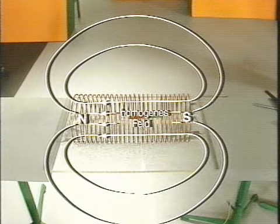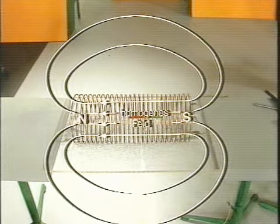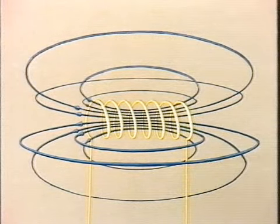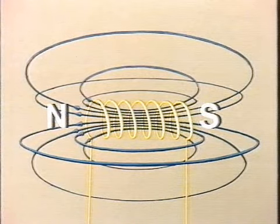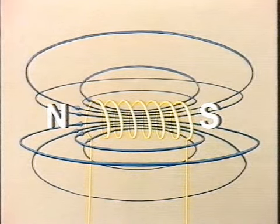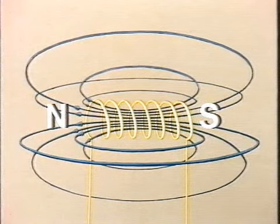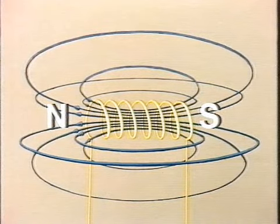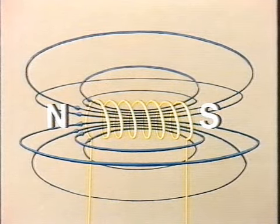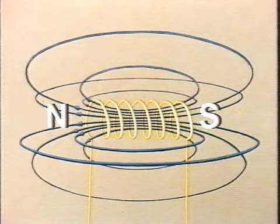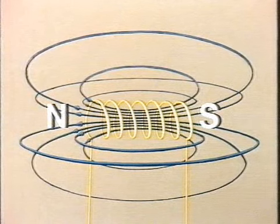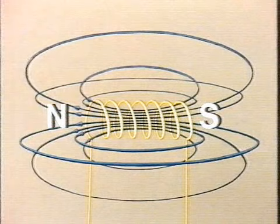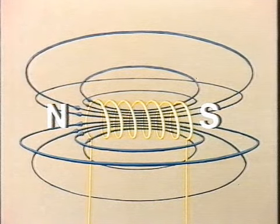Wir ergänzen das ebene Feldlinienbild wieder zu seiner räumlichen Gestalt. Wir erkennen, dass ein Nord- und ein Südpol einer Spule immer kombiniert auftreten müssen. Denn da die magnetischen Feldlinien in sich geschlossene Kurven sind, gehört natürlich zu einer Eintrittstelle der magnetischen Feldlinien, also zu einem Südpol, auch wieder eine Austrittstelle, also ein magnetischer Nordpol. Es ist nie möglich, einen Nordpol für sich alleine oder einen Südpol für sich alleine zu erzeugen. Nord- und Südpol treten immer gemeinsam auf.